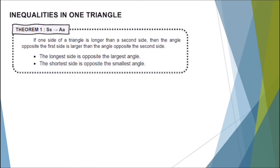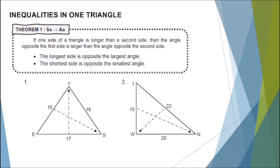The longest side is opposite the largest angle, and the shortest side is opposite the smallest angle. Let's name the smallest and largest angles in the given triangles. For number 1, let's identify our smallest angle. The shortest side measures 15, and the opposite angle to it is angle S. Therefore, our smallest angle is angle S.